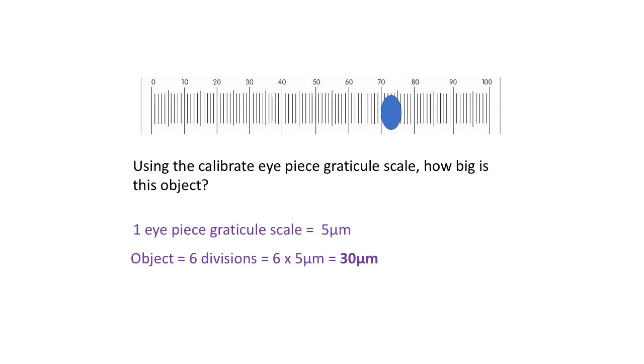That's how to calibrate an eyepiece graticule. It is as simple as that. It's just a case of lining up the divisions against the micrometer, working out what one division is equal to on the eyepiece graticule, and then lining up your objects and measuring them.